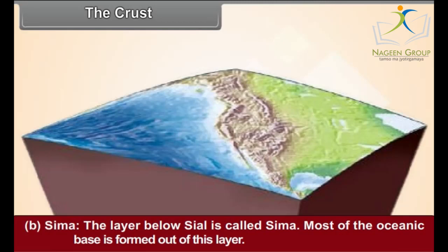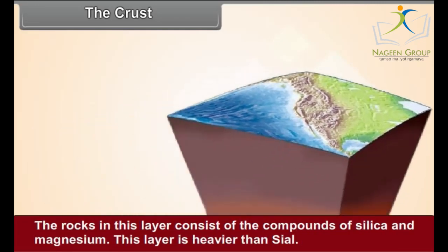Most of the oceanic base is formed out of the SIMA layer. The rocks in this layer consist of the compounds of silica and magnesium. This layer is heavier than SIAL.